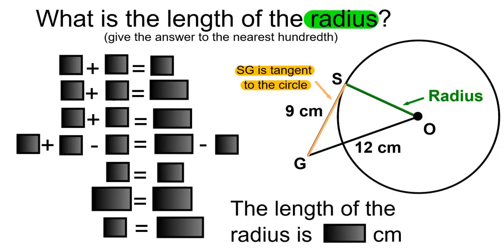And when a radius touches a tangent line at the point of tangency, the angle will always be 90 degrees.